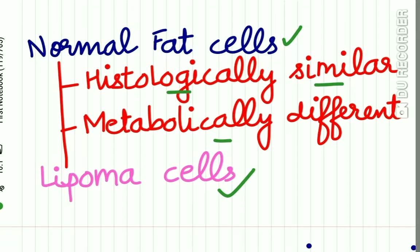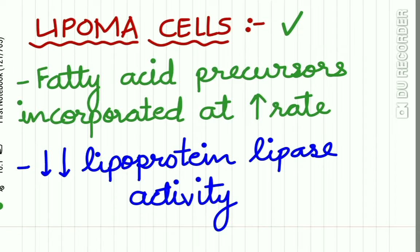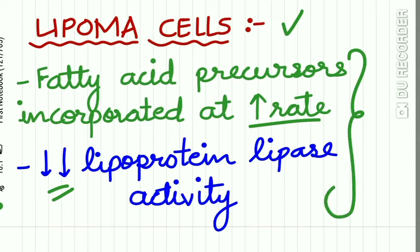When a patient is on starvation, they lose fat from normal fat cells, but there is no loss of fat from lipoma cells. Lipoma cells have fatty acid precursors incorporated in them at a rapid rate, and they also have reduced lipoprotein lipase activity. These two points differentiate lipoma cells from normal fat cells.